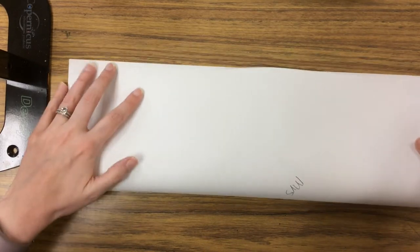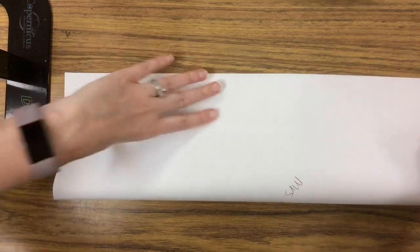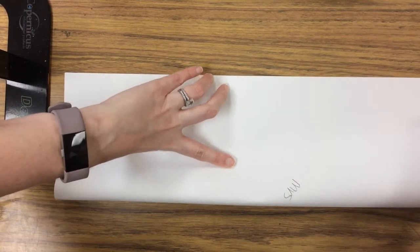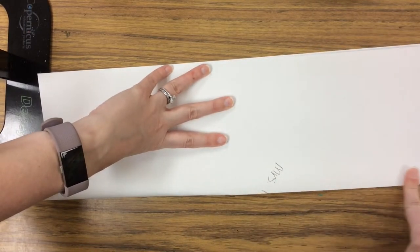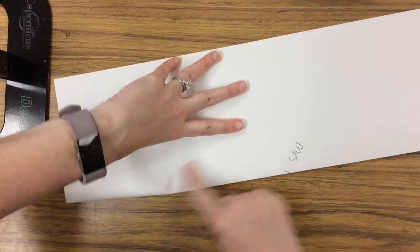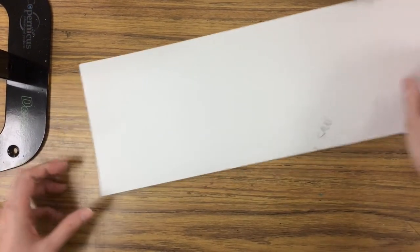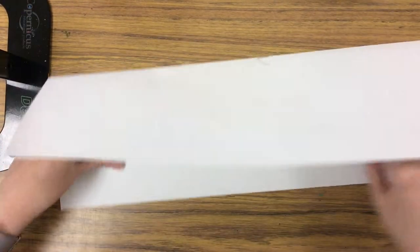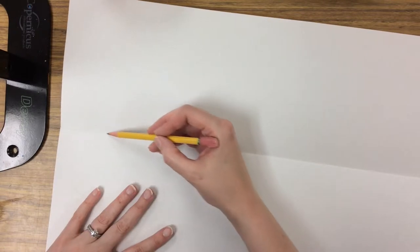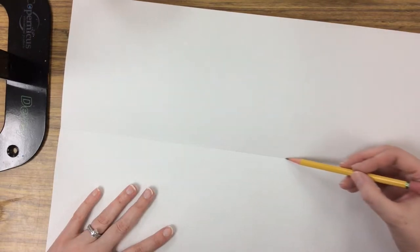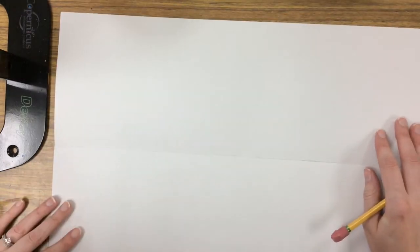I'm going to line up my two corners. It's a little tricky because it's such a long paper. When we fold, we always want to press from the middle and then go outward. If this isn't perfectly centered, not a huge deal. Then I'm going to flip it over and you can lightly trace that fold so you can see it a little bit better.